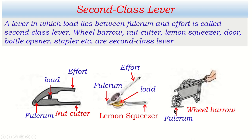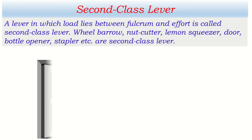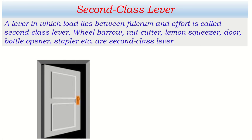The wheelbarrow is another example of a second class lever. Here, the wheel rests on the ground and doesn't move — this is the fulcrum. The material kept in it is the load, and force is applied at the handles. That's why load lies between the effort and fulcrum, so this is a second class lever.